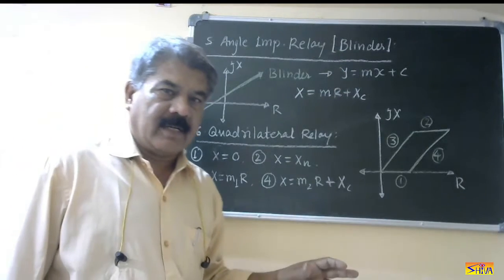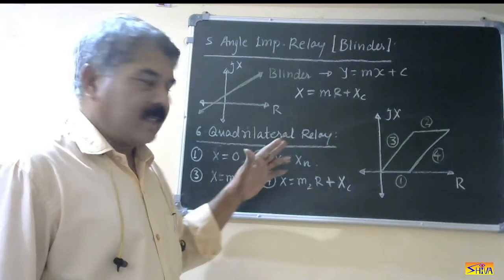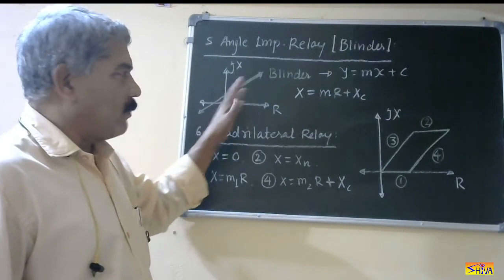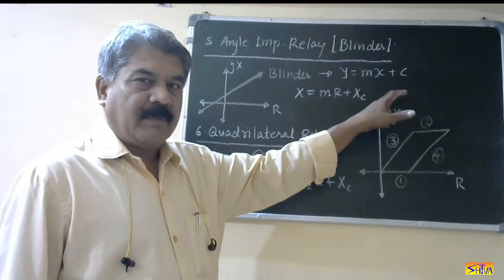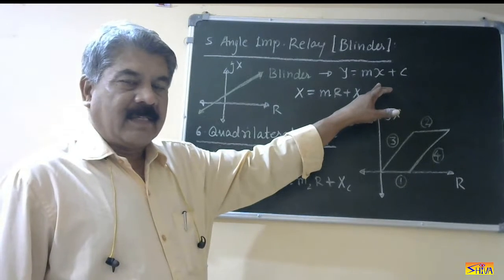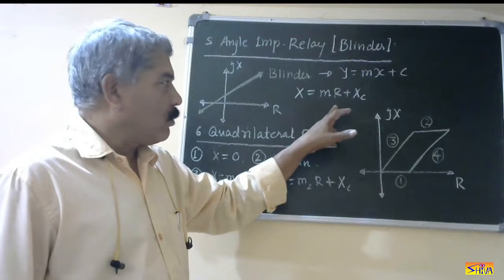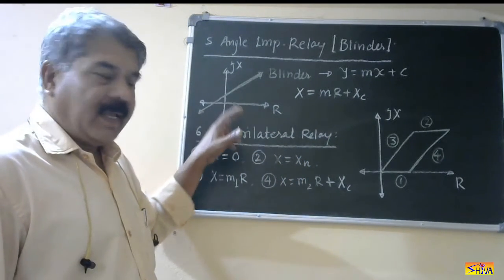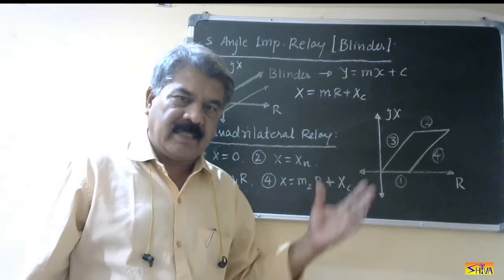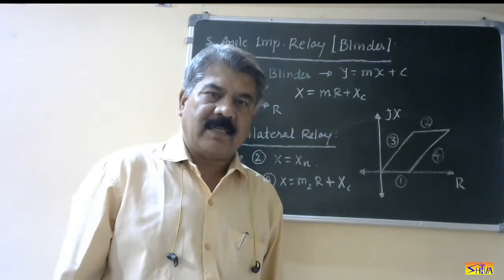The fifth type is the angle impedance relay, also called the blinder. The characteristic of the blinder or angle impedance relay is a straight line at some angle in the R-X diagram. In general, a straight line has the equation y = mx + c. In the R-X diagram, y represents reactance X and x represents resistance R. So the characteristic of the blinder is X = mR + Xc, where m is the slope and Xc is its intercept on the reactance axis. The line can be at any angle, so m and c can vary, but the characteristic is always a straight line — therefore it is called an angle impedance relay or blinder.